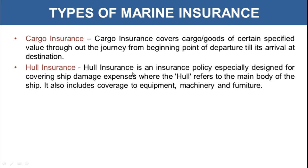Second is hull insurance. Hull insurance is an insurance policy specially designed for covering ship damage expenses, where the hull refers to the main body of the ship — specifically the outer body. Any damage happening to the ship due to high waves, bad weather, collision, etc., would be covered under this marine insurance policy. Along with the outer body coverage, it also provides coverage to equipment, machinery, and furniture — all that is present in the ship.